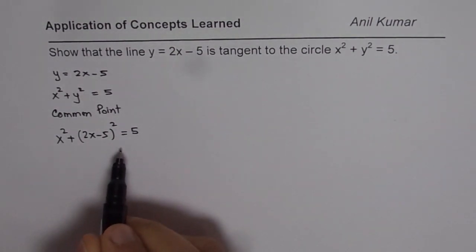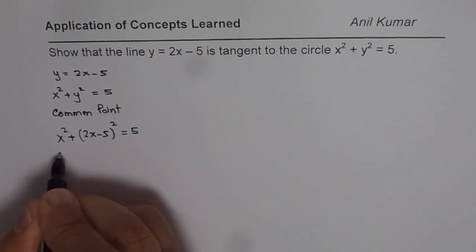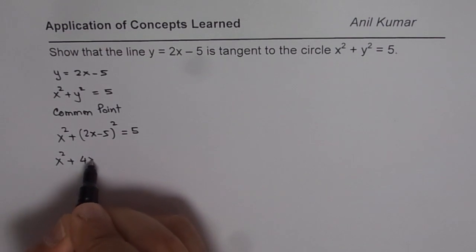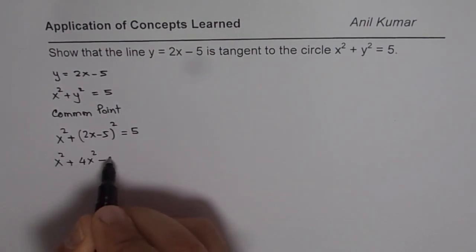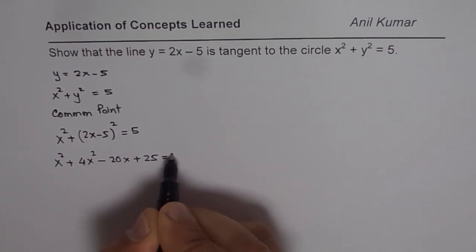Now we have an equation in x, we can solve for it. So we get from here x square plus, let us open this up. So when you open this up, you get 4x square minus 2ab, 10 times 2 is 20, x plus 25 equals 5.